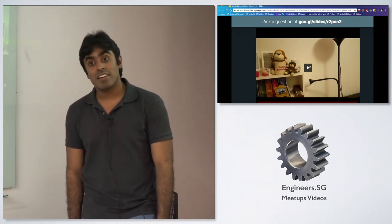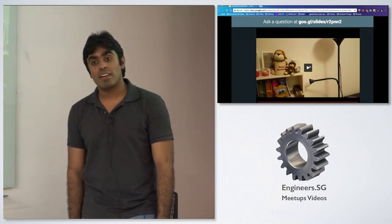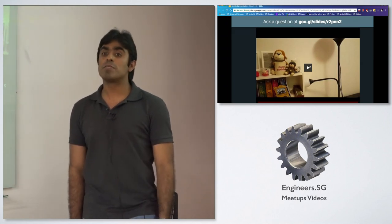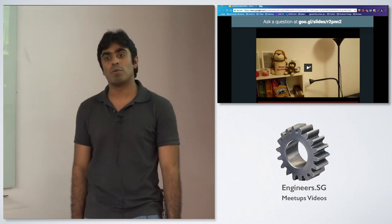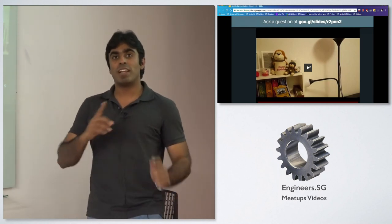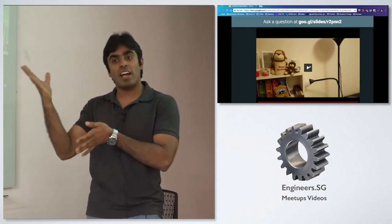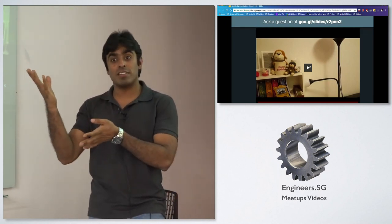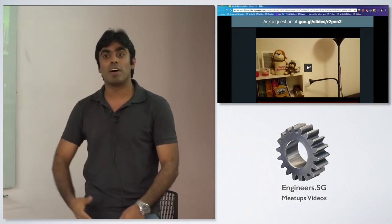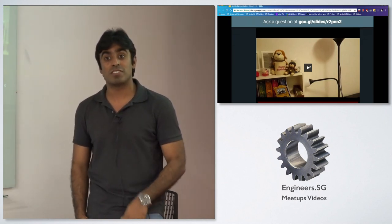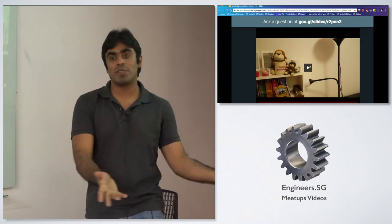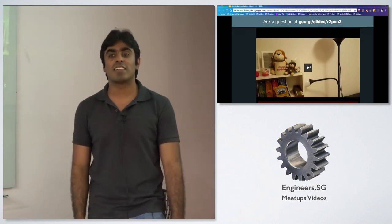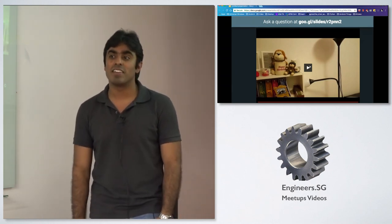Does the Raspberry Pi need to be connected to the external internet to receive from Google Home? Correct — because Google Home is connected to the house WiFi, and when it sends to API.ai, API.ai needs a URL to send the JSON to. That needs to be on the internet — it can't be on your local web server.